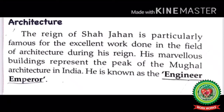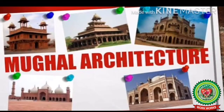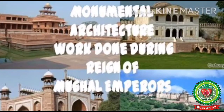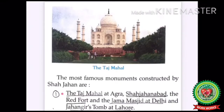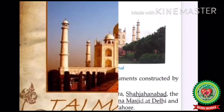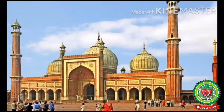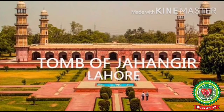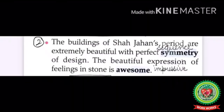Here is a question to note: why was Shah Jahan known as the engineer emperor? Because he is particularly famous for the excellent work done in the field of architecture, and his marvelous buildings represent the peak of Mughal architecture in India. The most famous monuments — meaning historical buildings — constructed by Shah Jahan are: the Taj Mahal at Agra, Shah Jahanabad, the Red Fort and the Jama Masjid at Delhi, and Jahangir's tomb at Lahore.